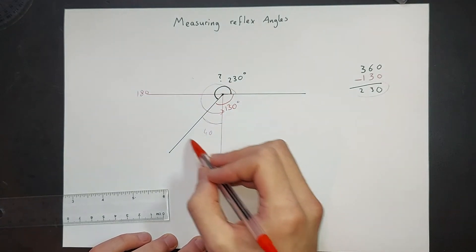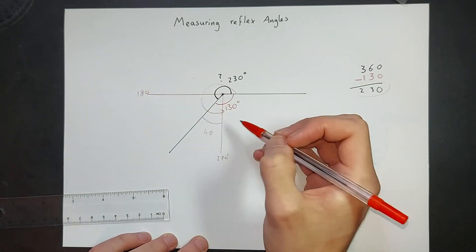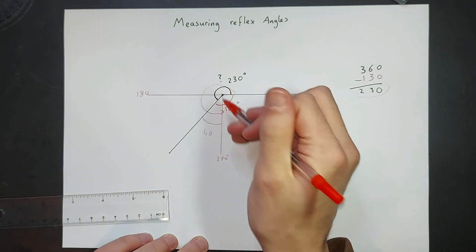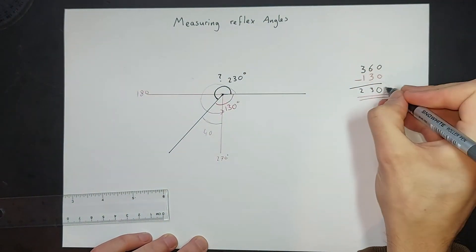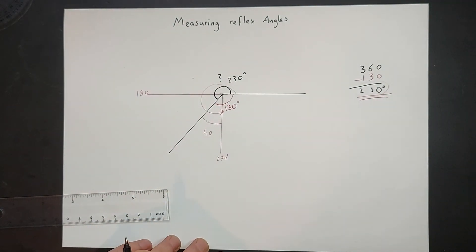So is that just slightly closer to this side than that side? Looks reasonable, I'd be happy with that. So that means this answer, 230 degrees, is a reasonable answer for that reflex angle.